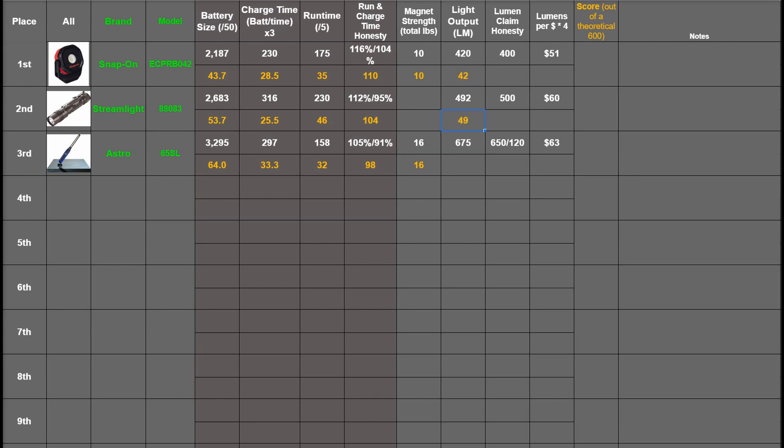Then the honesty of those figures get turned into points here in an even more dramatic fashion which is the point of this light testing series really, to see who's lying. The 65SL had two lights so its total lumen output is versus total advertised. Then we have lumens per dollar. Those are turned into points here with Snap-on and Streamlight getting quite similar and the 675 lumen 65SL being a bit higher here.